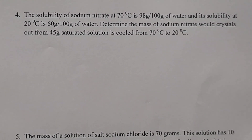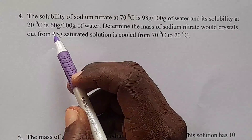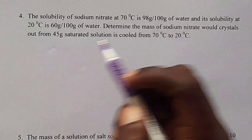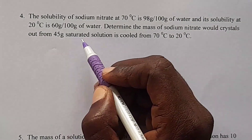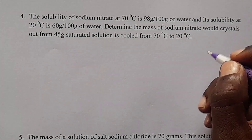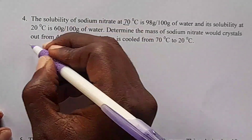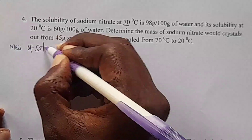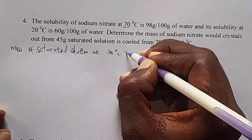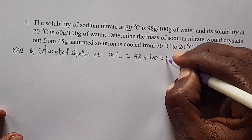Number 4: the solubility of sodium nitrate at 70 degrees Celsius is 98 gram per 100 gram of water, and its solubility at 20 degrees Celsius is 60 gram per 100 gram of water. Determine the mass of sodium nitrate that will crystallize out from 45 gram of saturated solution cooled from 70 degrees Celsius to 20 degrees Celsius. The mass of saturated solution at 70 degrees Celsius is 98 plus 100, which equals 198 gram.